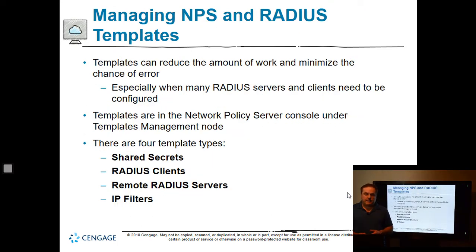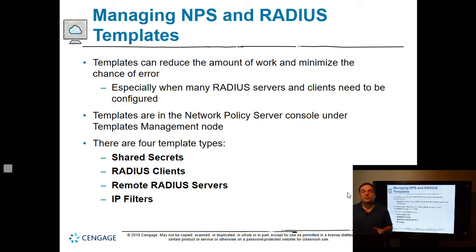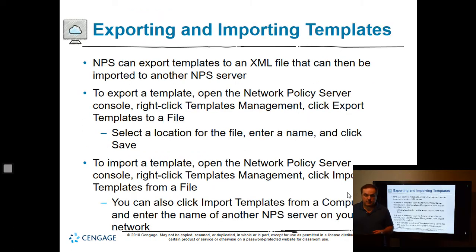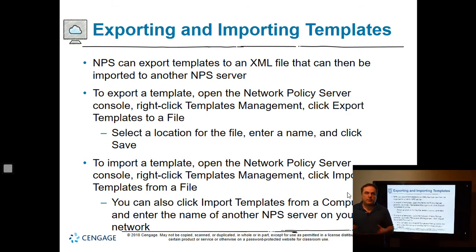Templates can reduce the amount of work and minimize the chance of error. You can use a template that comes with routing remote access, NPS, and RADIUS, and there are four different types: shared secret, RADIUS clients, remote RADIUS servers, and IP filters. If any of those apply to you, you can use the pre-configured templates. NPS can export the templates to an XML file and then be imported into another network policy server, so if you have multiple RADIUS servers you can export your customized configuration to other servers to load balance that traffic.